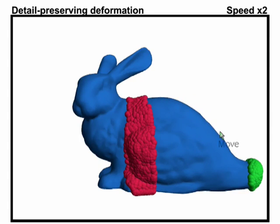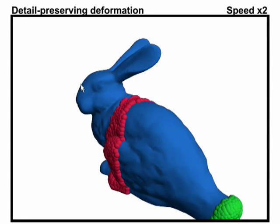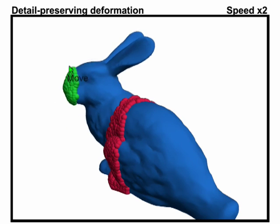Detail preserving techniques treat the edited object to be made of a homogeneous, rubber-like material that responds uniformly to user manipulations.